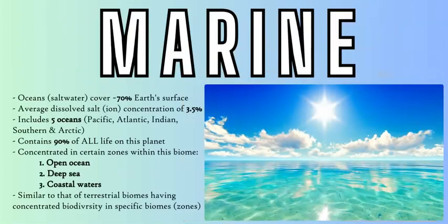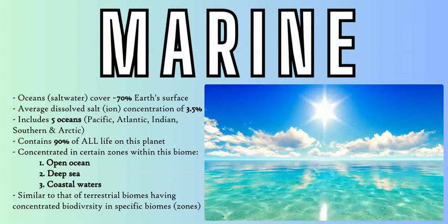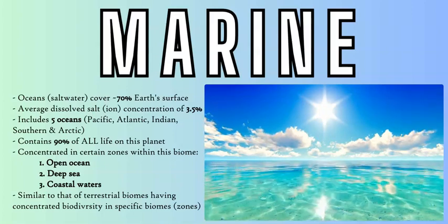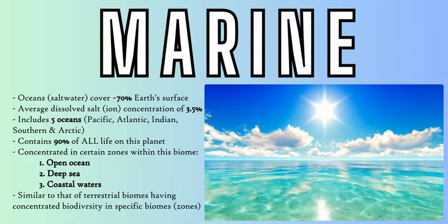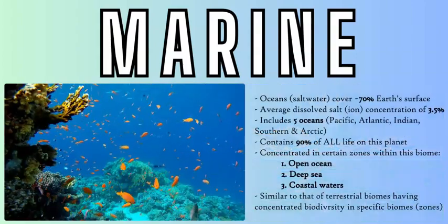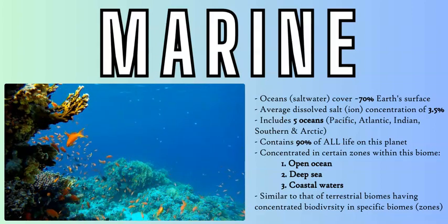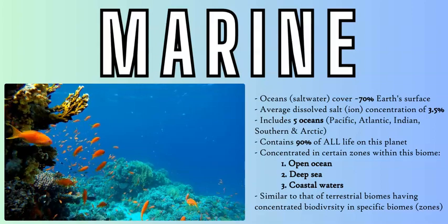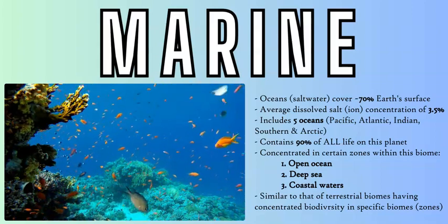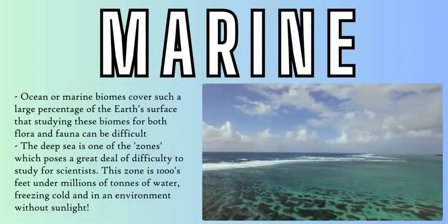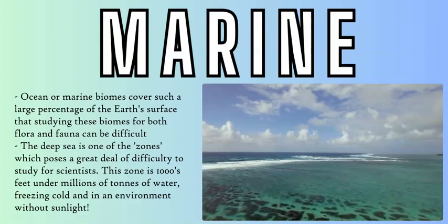The marine biome is saltwater-based, covering the five major oceans. Most of the Earth's surface is covered in ocean — about 70% overall, about 83% in the southern hemisphere and about 61% in the northern hemisphere. About 90% of all life is in the oceans, which is remarkable given how much life we see in terrestrial biomes. The marine biome includes the deep sea and benthic areas, the open ocean, and coastal waters, which include coral reefs and shallower continental shelf areas with diverse ecosystems.